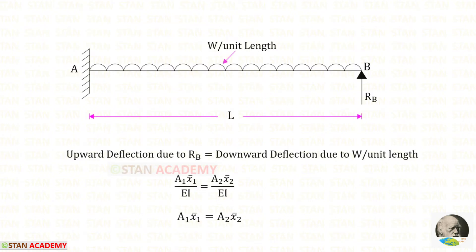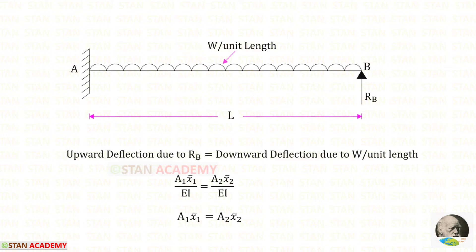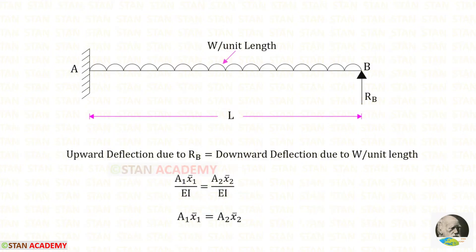In this analysis, first we are going to find the prop reaction Rb. For that we can use this concept: at point B, the upward deflection due to Rb will be equal to the downward deflection due to the uniformly distributed load. To find the deflections, we can use the moment area method. The formula is area × x-bar upon EI. Using that formula, we get the expression where Area1·x̄1 is equal to Area2·x̄2.